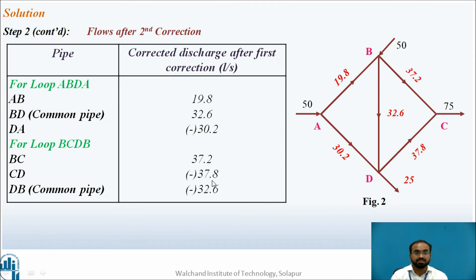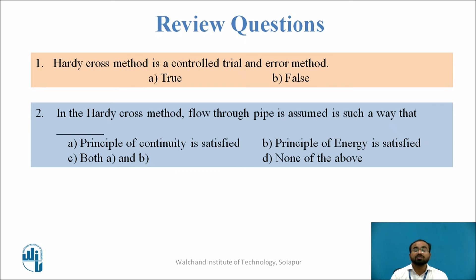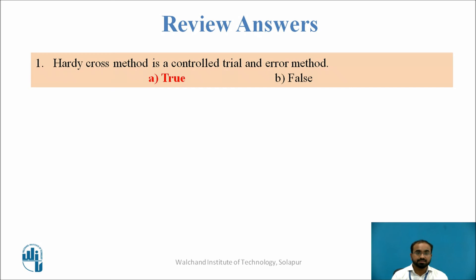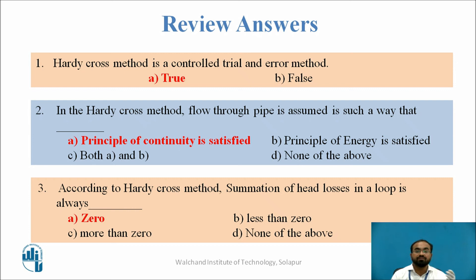Now let us have a few review questions. Hardy-Cross method is a controlled trial and error method — true or false? In Hardy-Cross method, flow through a pipe is assumed in such a way that which principle is applicable — continuity or energy? According to Hardy-Cross method, summation of head losses in a loop is always 0, less than 0, or more than 0? The answers: the first statement is true. For the second, the principle of continuity is followed — flow rates coming into a point equal flow rates going out. In Hardy-Cross method, the summation of head loss is always 0.